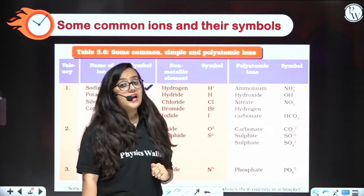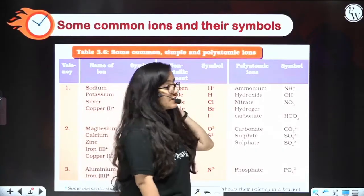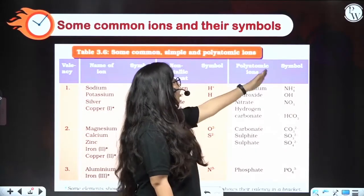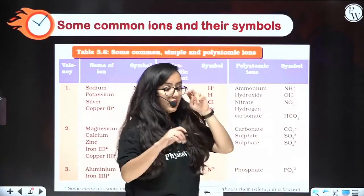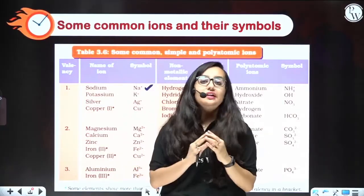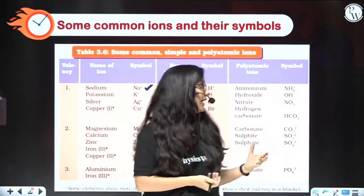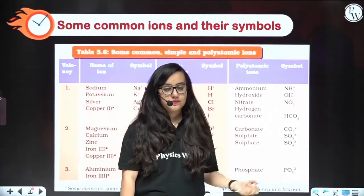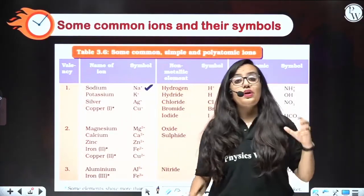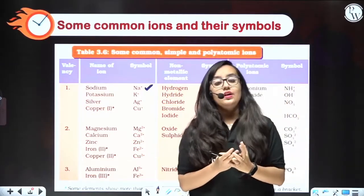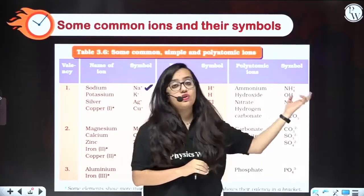Now, polyatomic ions are very important — they are asked many times. We treat a polyatomic ion as a single ion. For example, NH₄ — ammonium — we are concerned about NH₄ as a whole; we do not talk individually about nitrogen or hydrogen.